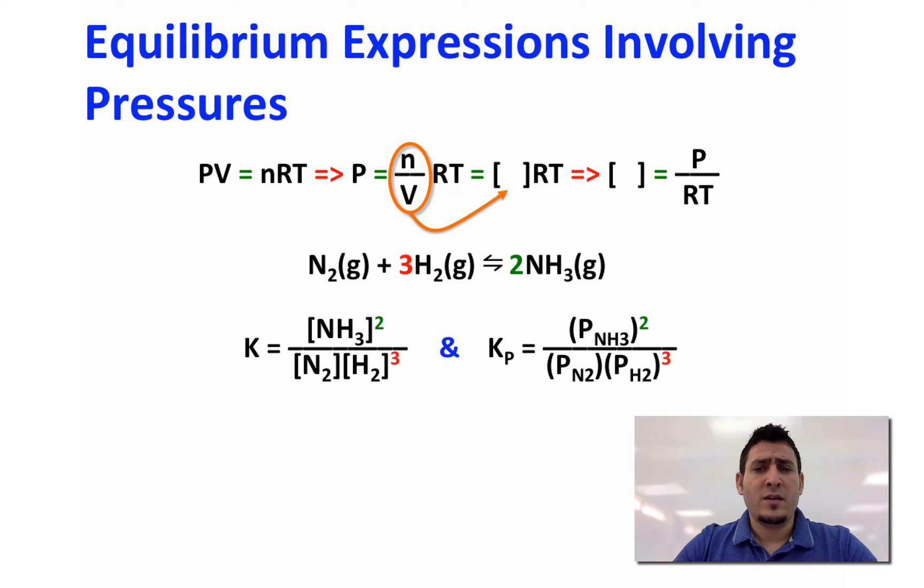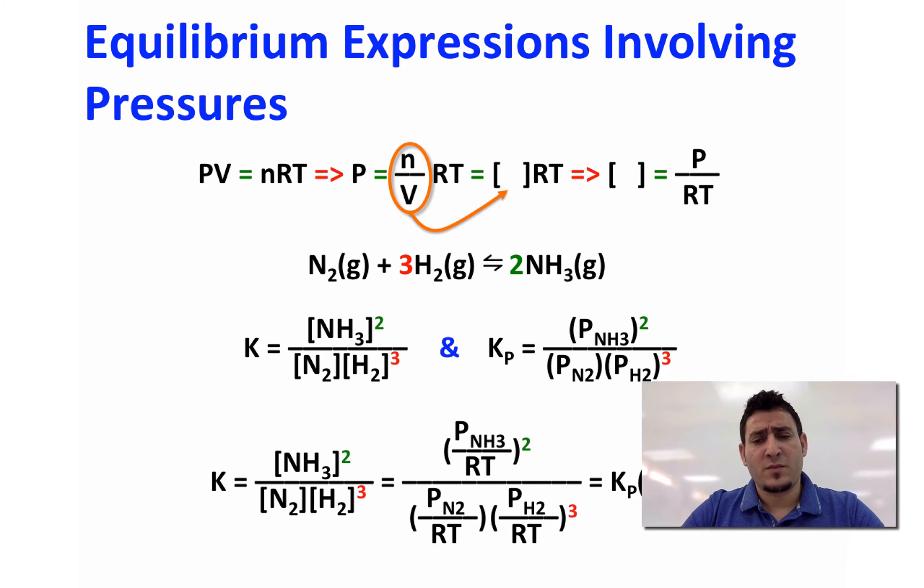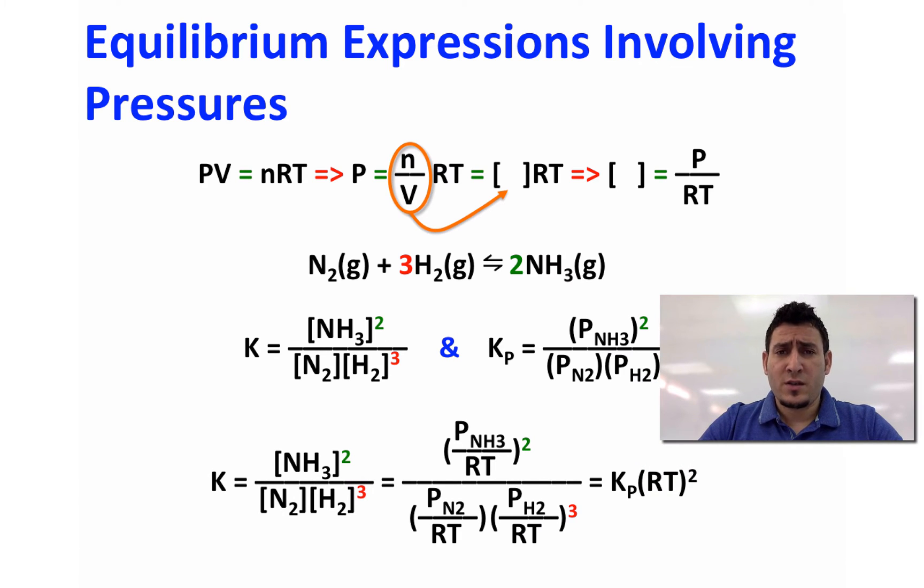Now if we replace the concentrations of the reactants and products in terms of pressure divided by RT in the expression of K, we get the following expression. So now rearranging this expression we can find that K is equal to Kp multiplied by RT to the power 2. Now this 2 came from the subtraction between the powers of the reactants minus the power of the product.